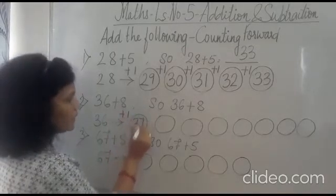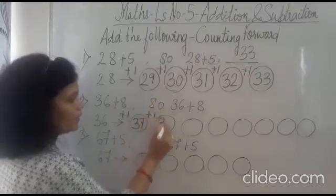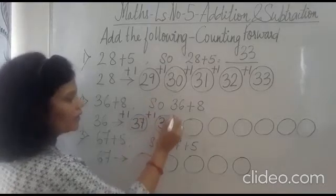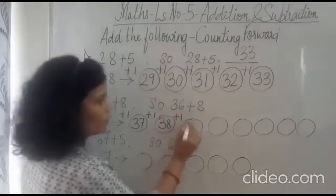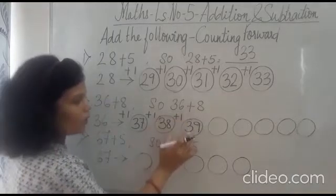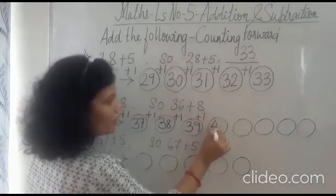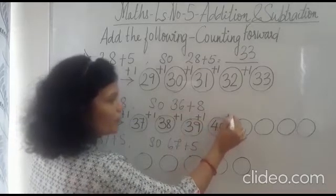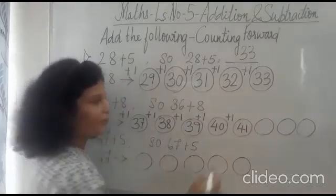So now we will see 36 plus 1 step. It will become 37. One more step. 38. For every number, we are adding 1 because we are moving forward with one number. So it has become 38 plus 1 is 39. 39 plus 1 is 40. 40 plus 1 is 41. Is that understood, children?